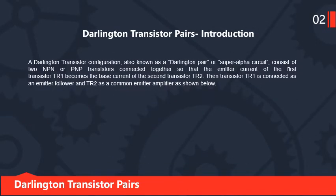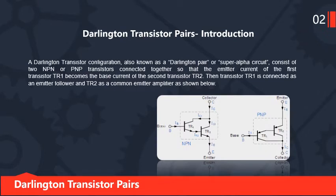A Darlington transistor configuration, also known as a Darlington pair or super alpha circuit, consists of two NPN or PNP transistors connected together so that the emitter current of the first transistor TR1 becomes the base current of the second transistor TR2. TR1 is connected as an emitter follower and TR2 as a common emitter amplifier, as shown in the circuit diagram.